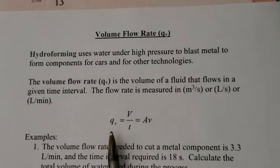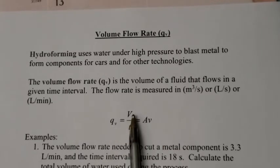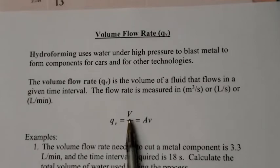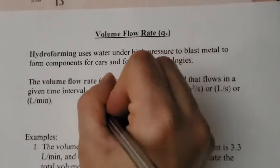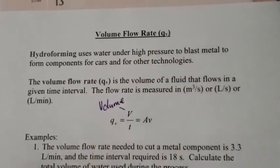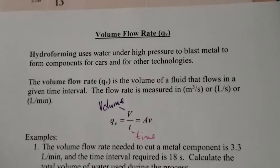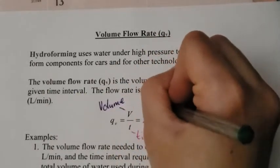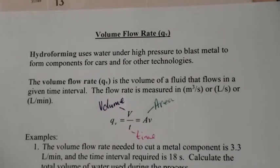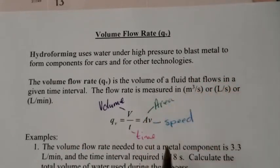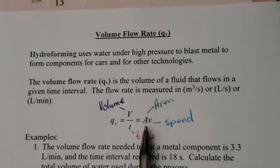The formula for flow rate is volume divided by time, or we can say area times speed. Capital V is the volume divided by time. We know A is area, and the little curly V is actually the speed. There are two formulas here: we can either do volume divided by time, or we can say area times the speed.